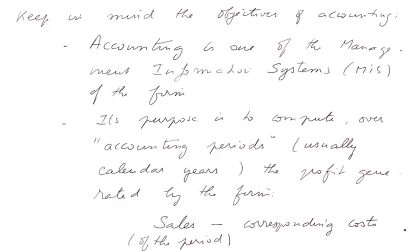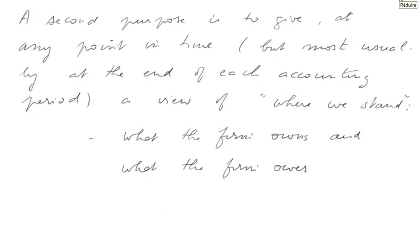Keep in mind the objectives of accounting. Accounting is one of the Management Information Systems of the firm. Its purpose is to compute over accounting periods — usually calendar years from the 1st of January until the 31st of December — the profit generated by the firm, which is computed by the sales of the period minus the corresponding cost. A second purpose is to give, at the end of each accounting period, a view of where we stand: what the firm owns and what the firm owes.